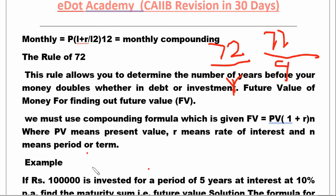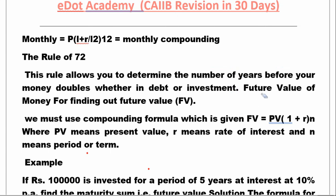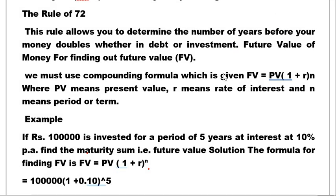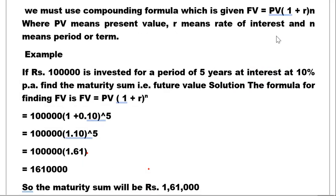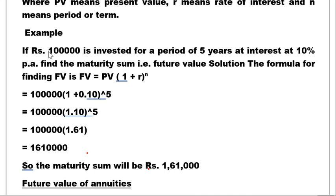For future value of money, we use the compounding formula: FV = PV × (1 + r)^n. For example, ₹1 lakh invested for 5 years at 10% interest — using this formula — gives a maturity amount (future value) of ₹1,61,000 approximately. Remember this formula.